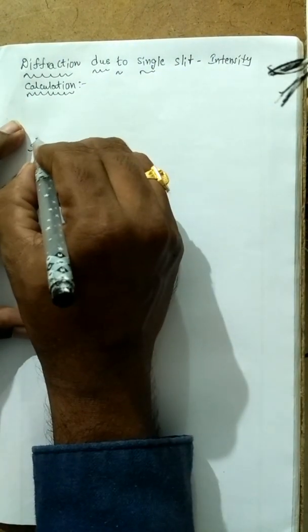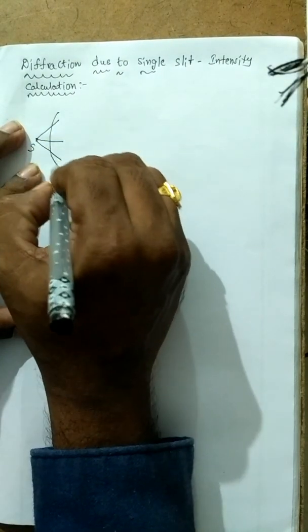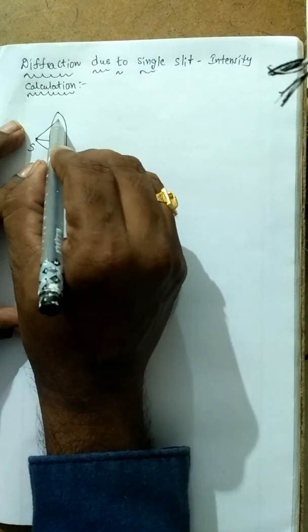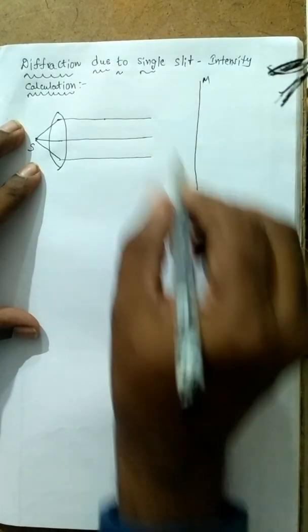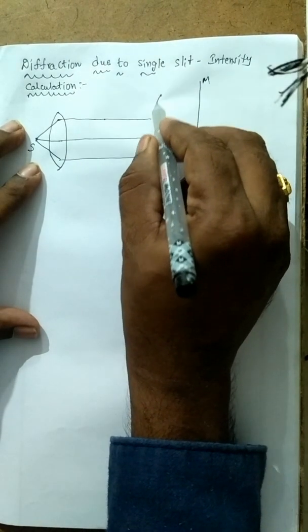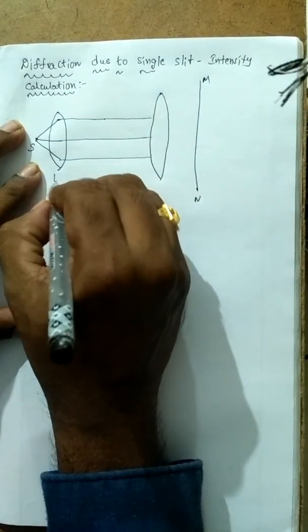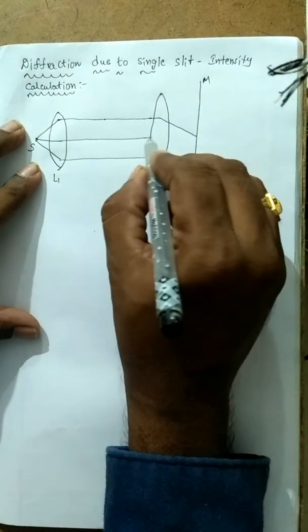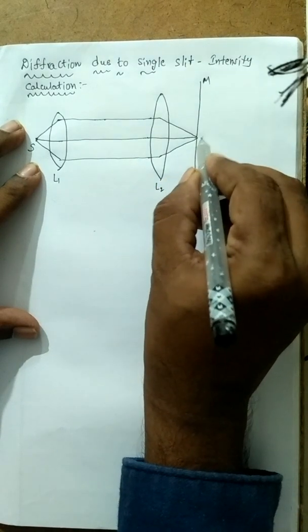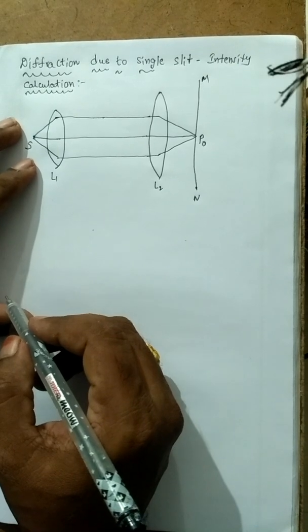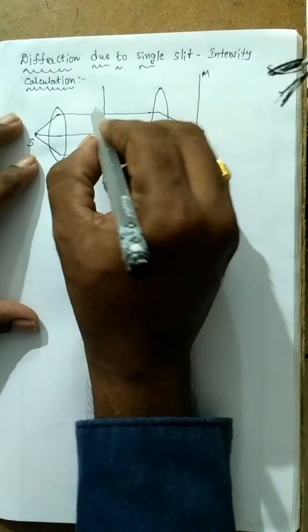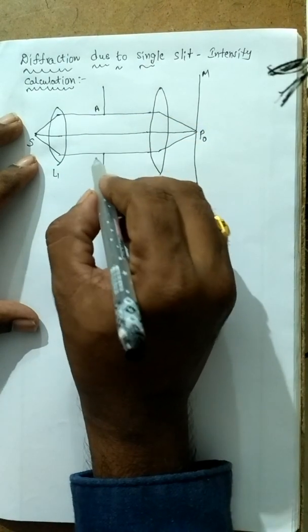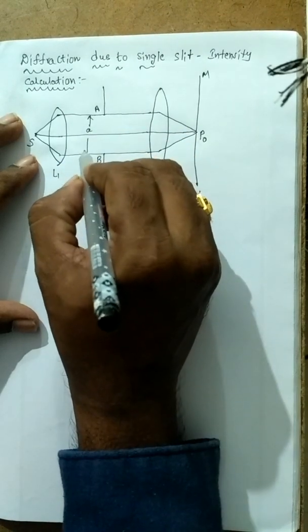S is a source of light that emits light waves in all directions. To get a parallel beam of light rays, we use a lens. These rays travel long distances, and to focus them on the screen MN, we use two lenses, L1 and L2. They focus the beam at position P0, which is the principal maxima. We consider a slit of width 'a'.